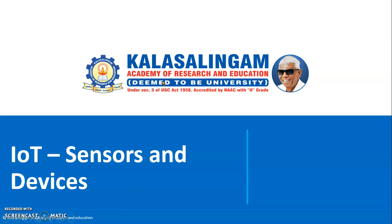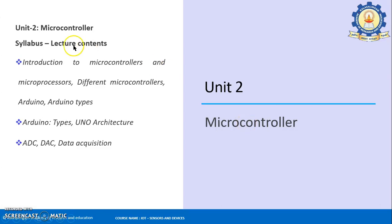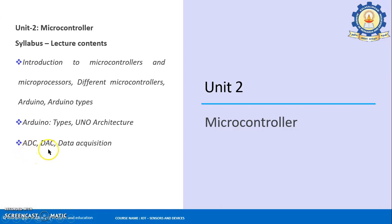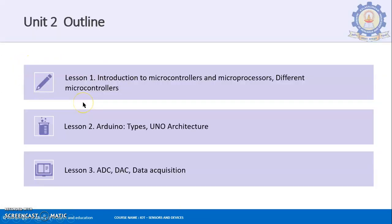Hi there. In this video we are going to be looking into the second unit of IoT sensors and devices. In this second unit we will be looking into the main topics related to microcontrollers and microprocessors, the different types of microcontrollers available, the Arduino and its different types, the Arduino Uno architecture, and what is an ADC and DAC — analog to digital converter and digital to analog converter — and how data is received by the Arduino, that is data acquisition.